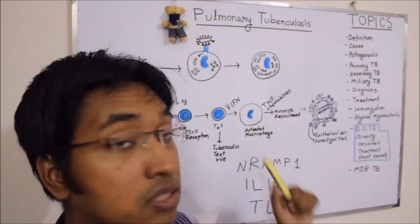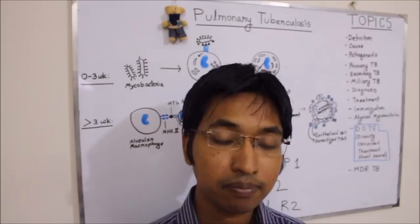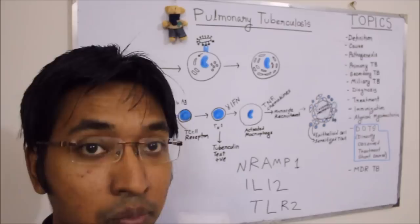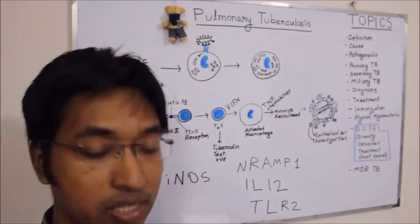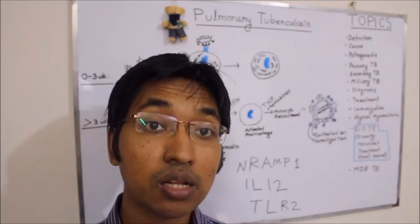T helper 1 cells release interferon-gamma, which activates macrophages, and macrophages will now begin to give us protection. At the same time, interferon-gamma will also induce expression of inducible nitric oxide synthase (iNOS), resulting in increased production of nitric oxide, which is also bactericidal for mycobacterium tuberculosis.